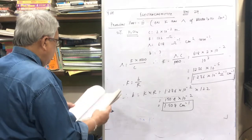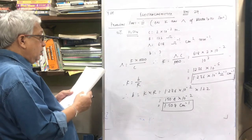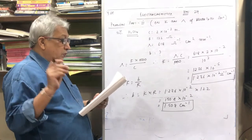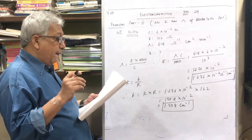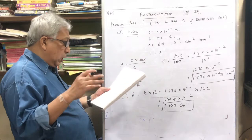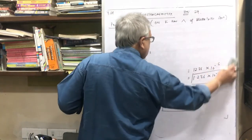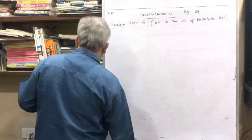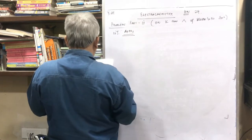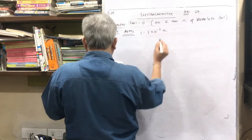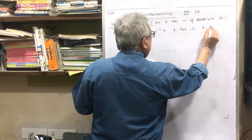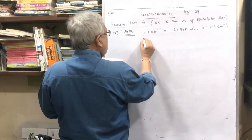Problem number 33: a conductivity cell filled with 0.02 molar AgNO3 gives at 25°C a resistance of 947 ohm. If the cell constant B is 2.3 per centimeter, what is the molar conductivity? They have given B and R, so I find K first then lambda. Concentration is 2 × 10⁻² molar, R is 947 ohm, B is 2.3 per centimeter, and they ask for lambda.